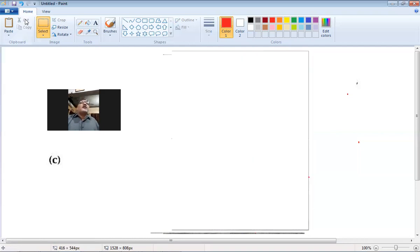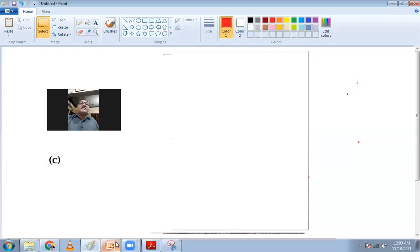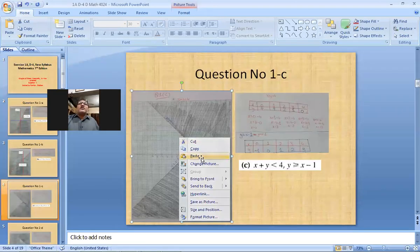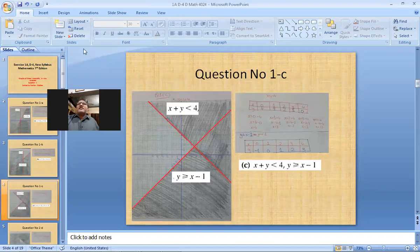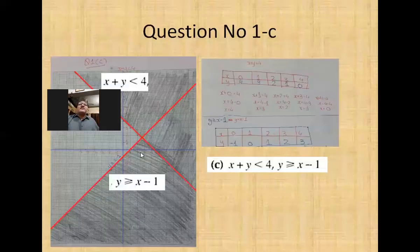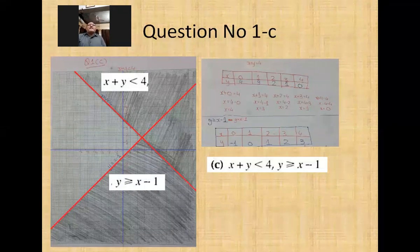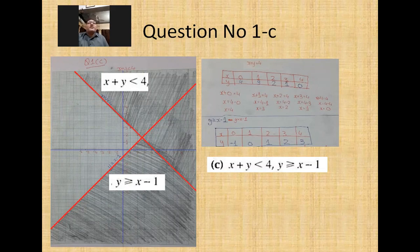I am doing this whole process so you can understand how it's done. This was question number three — let me paste it and increase the size. This is D4, Exercise 1a, question one, c part — Graphs of Linear Inequalities in Two Variables. Hopefully you understand.